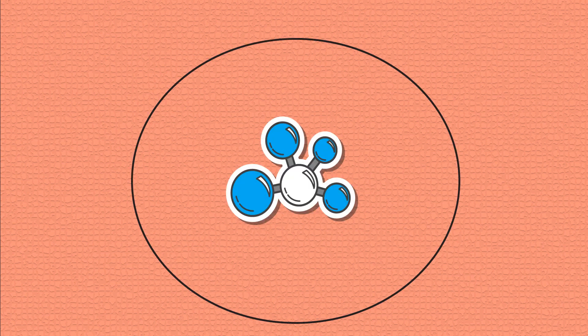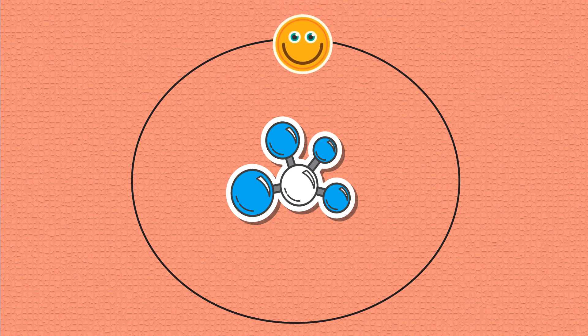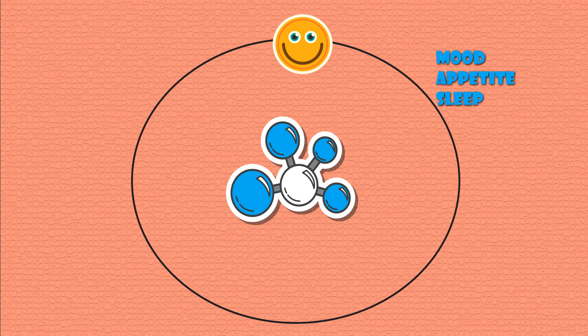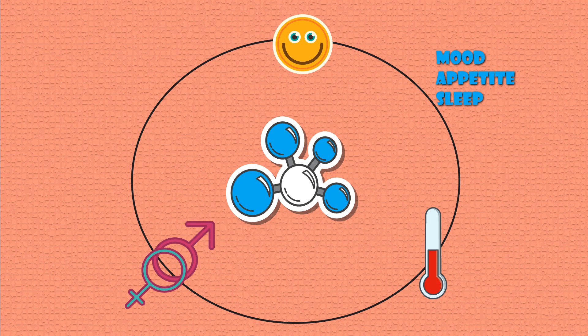So first, the king of all neurotransmitters: serotonin. Its popular name, 'hormone of happiness,' doesn't really describe its function but emphasizes its importance. Its main functions are in regulating mood, appetite, and sleep—basically the most important factors of life. Other functions include regulating body temperature, sexual behavior, memory, and learning.